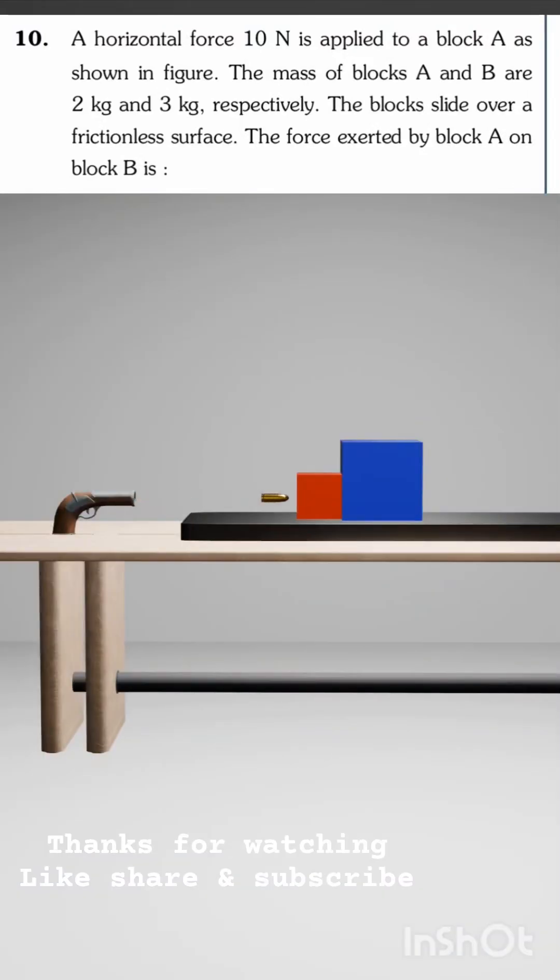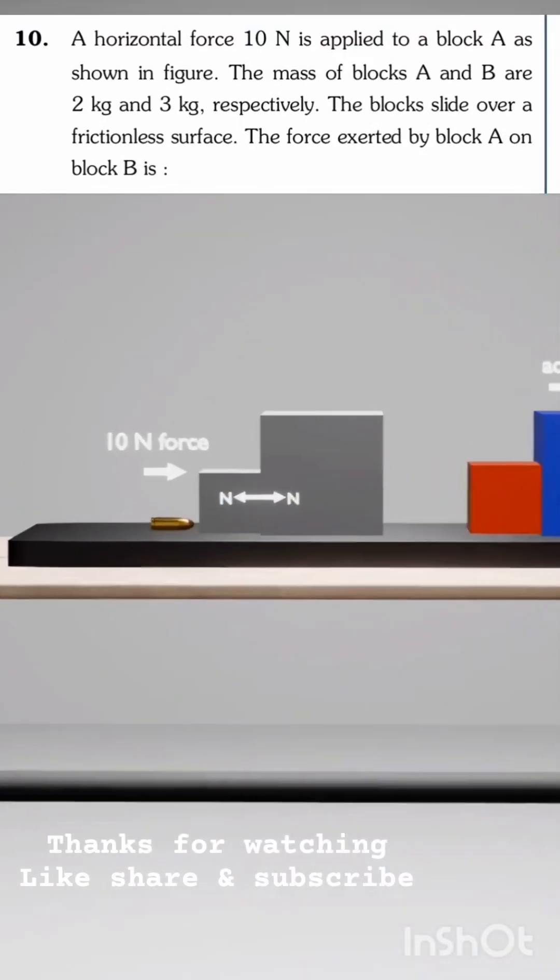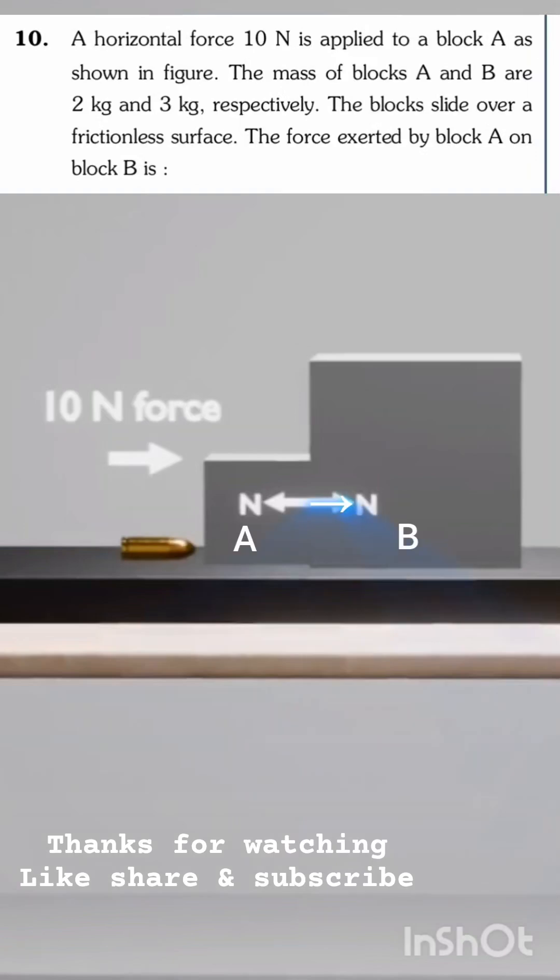When a 10N force is given to block A, block A exerts force N on block B, and block B also exerts the same force N on block A. Now, there are two forces acting on block A: 10N towards right and N towards left, and only one force acts on block B, that is N towards right.